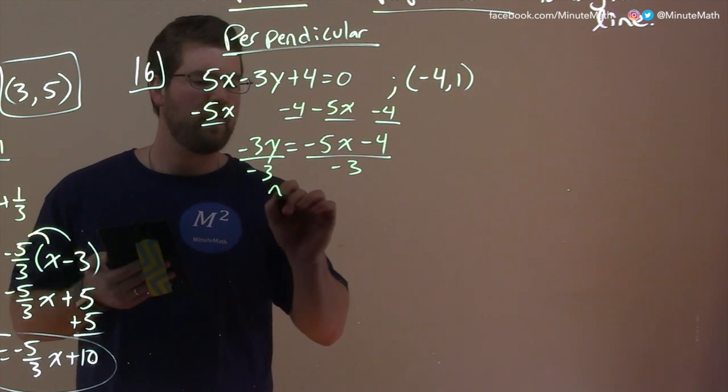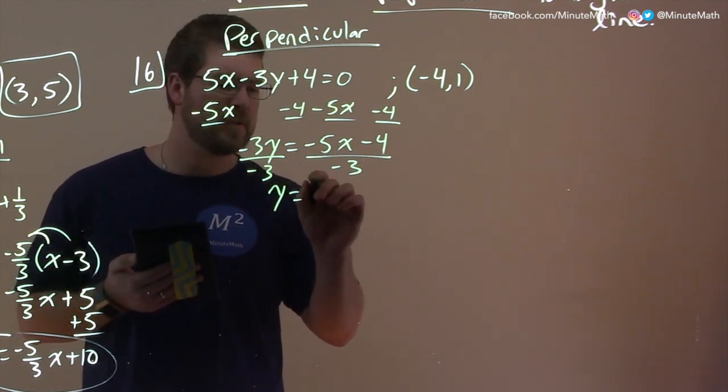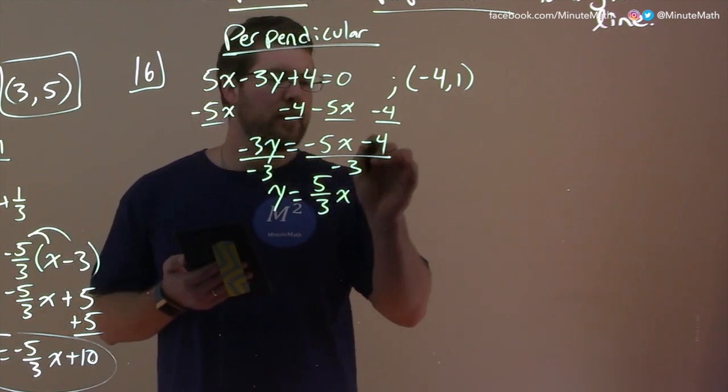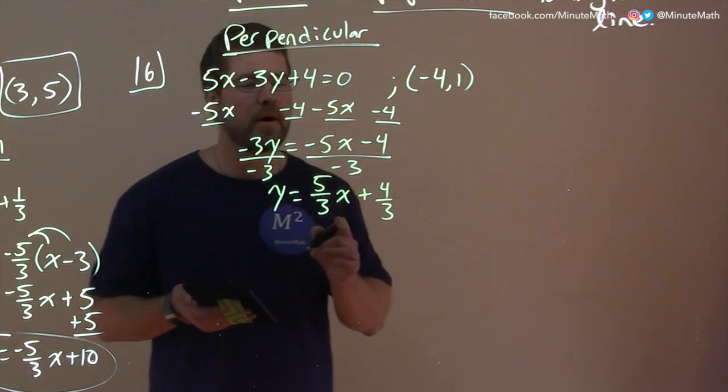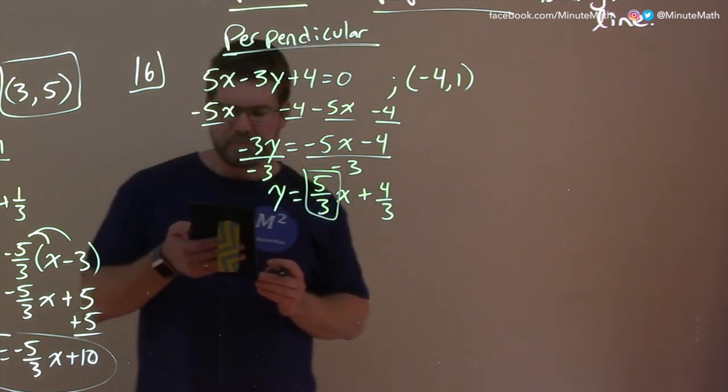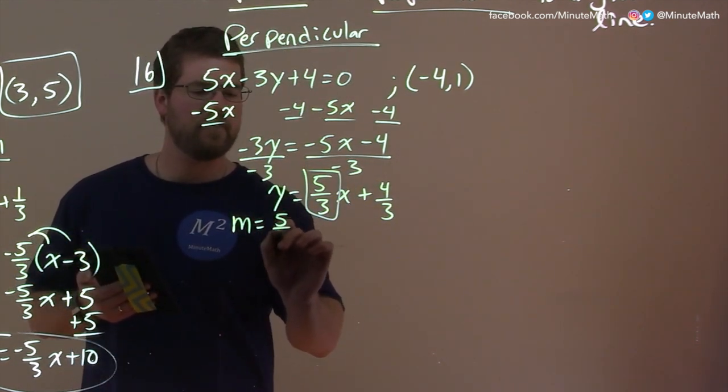I divide both sides by negative 3, and again, we have y by ourselves equals negative 5x divided by negative 3, which is a positive 5 thirds x. And then negative 3 and minus 4 is a positive 4 thirds. But all we care about here is a slope at 5 thirds. So our slope here of the line they gave us is 5 thirds.